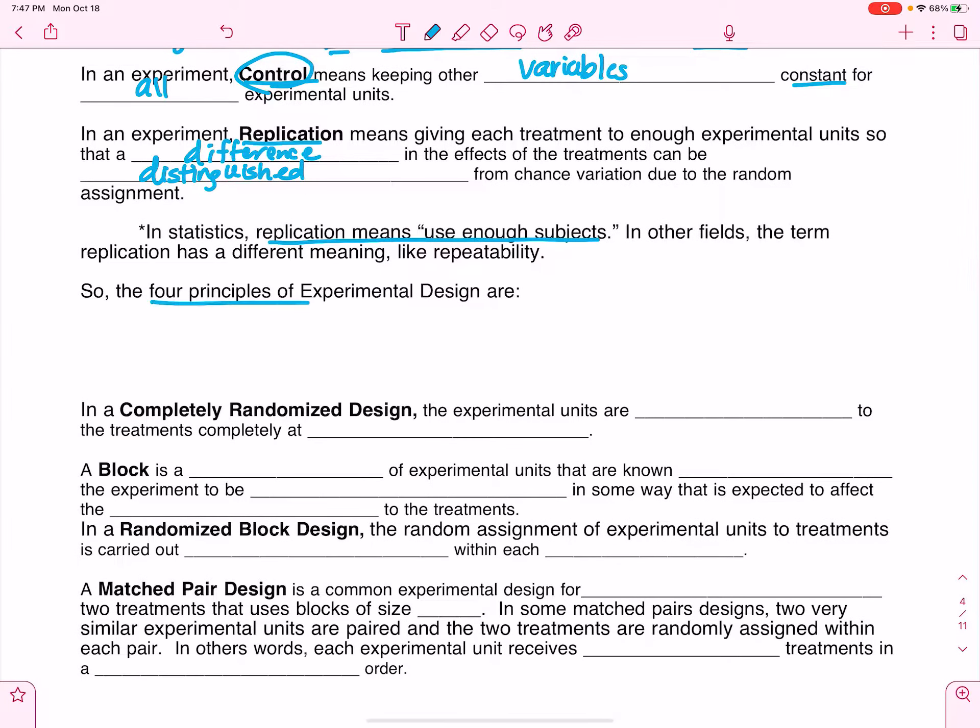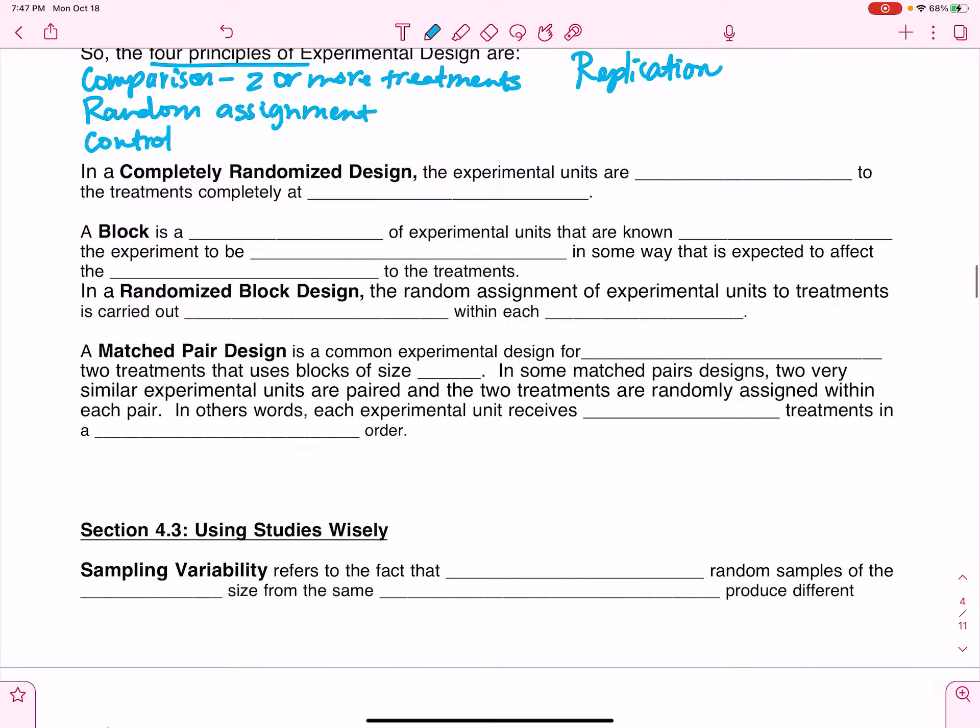The four principles of experimental design are: we have to have comparison and that can be in the form of having a control group or two or more treatments. We must have random assignment. That is a necessity in order for it to be considered an experiment. We must have control. We need to keep all the variables as much the same for all the participants as possible. And we have to have replication, which means that we are using enough subjects.